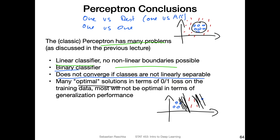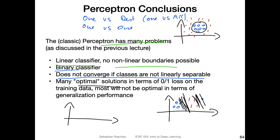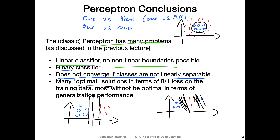Also, multiple solutions are possible if the classes are separable. Depending on how you initialize the weights, the perceptron may find different valid decision boundaries — one far left, one far right, one in the center. The best one is arguably the one in the center, since placing the boundary in the center helps reduce overfitting. But the perceptron is not capable of finding that optimal boundary; later methods we'll cover are better at this.